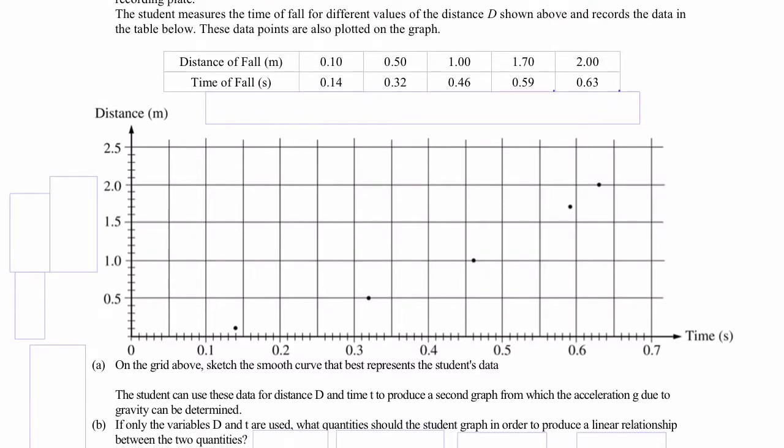Part A. On the grid above, sketch the smooth curve that best represents the student's data. Alright, so making the most smooth curve I can, start trying to connect each of those dots. It'll look something like that.